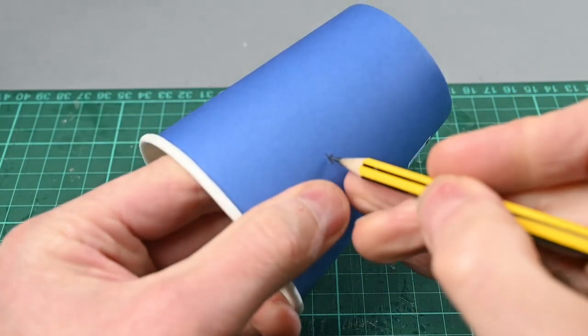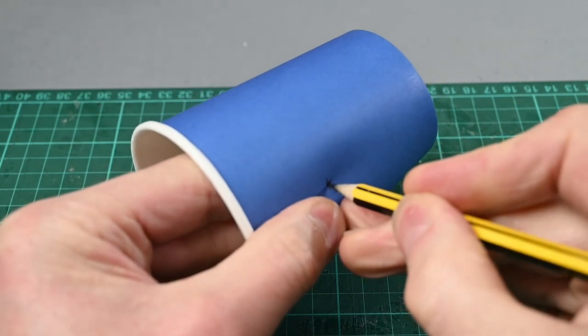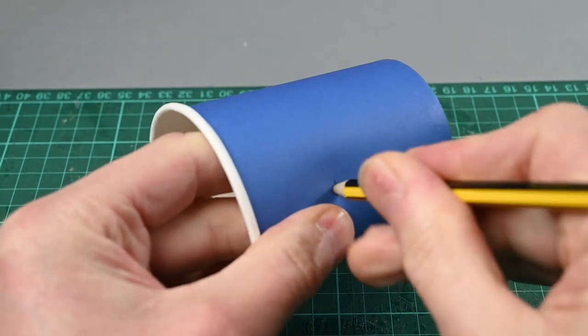So I used the point of a pencil with an eraser around the back so I don't spike myself, and pushed the pencil through. That's ready for the skewer to go in.